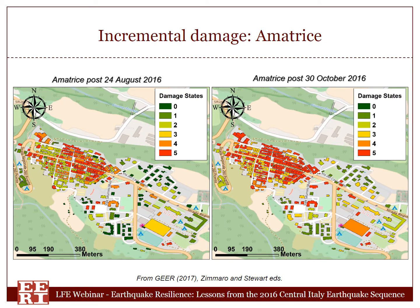This is Amatrice — same strategy of detailed structure-by-structure inspections and 3D models by drones. Amatrice also experienced a very remarkable incremental damage as a result of the whole sequence. This is one of the key lessons of this post-earthquake reconnaissance: it is very important to take a look at main shocks, but also truly important to analyze the impact of the entire sequence on our built environment. These maps show that damage can be disproportional as a result of long earthquake sequences.